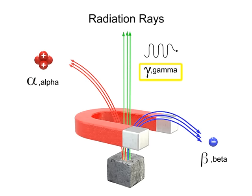Gamma rays are pure energy. Because a gamma ray has neither mass nor charge, it remains unaffected by the magnetic field.